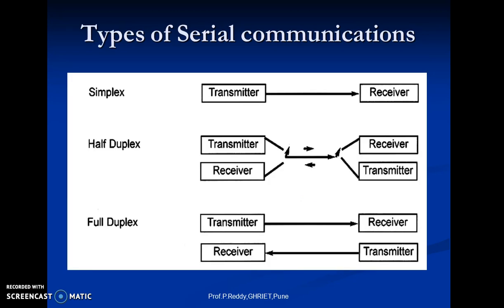Coming to the types of serial communication, there are three types: simplex, half-duplex, and full-duplex. In data transmission, the data can be transmitted and received — this is a duplex transmission. This is in contrast to simplex transmission, such as with printers, in which the computer only sends data.